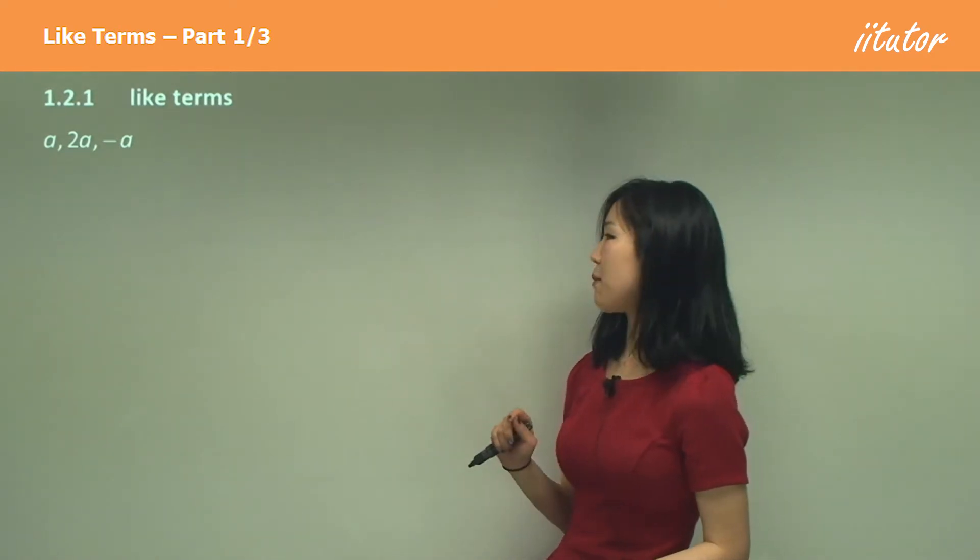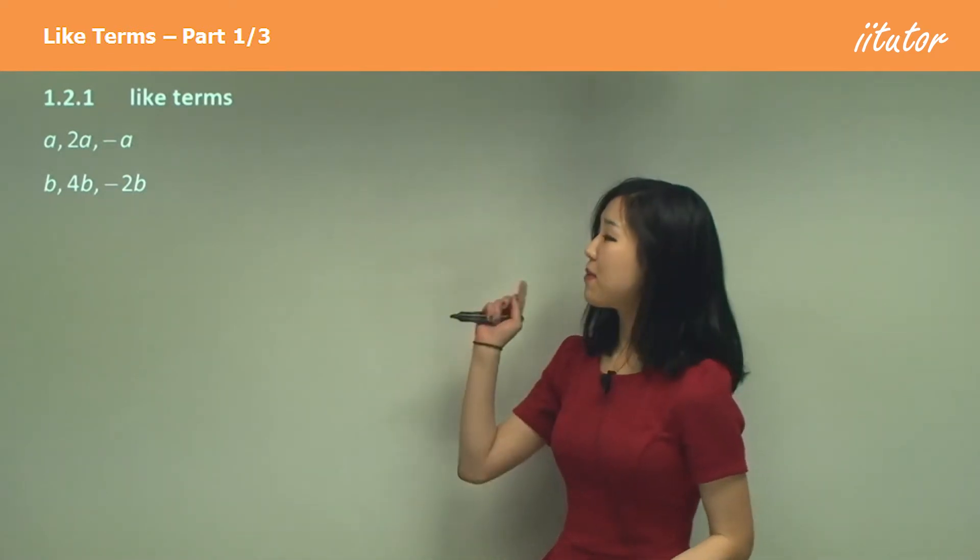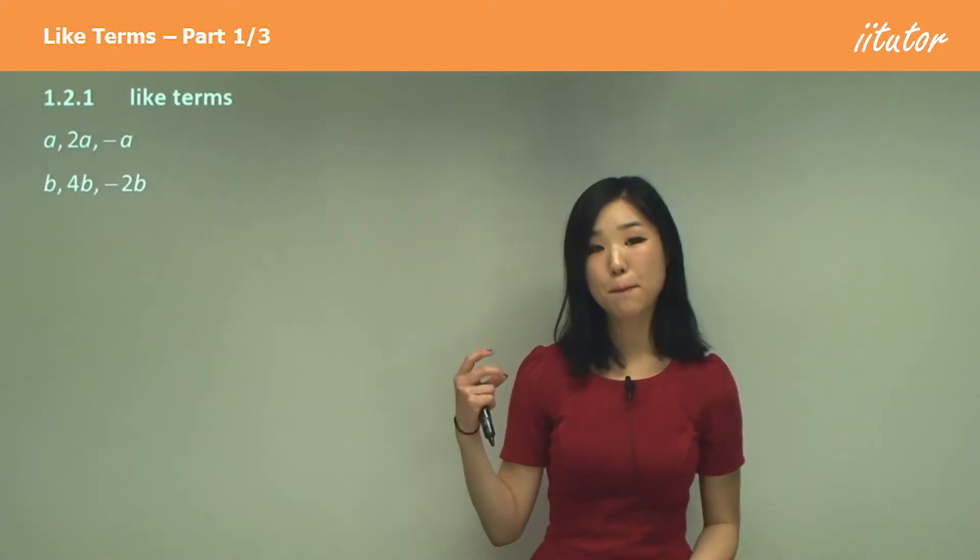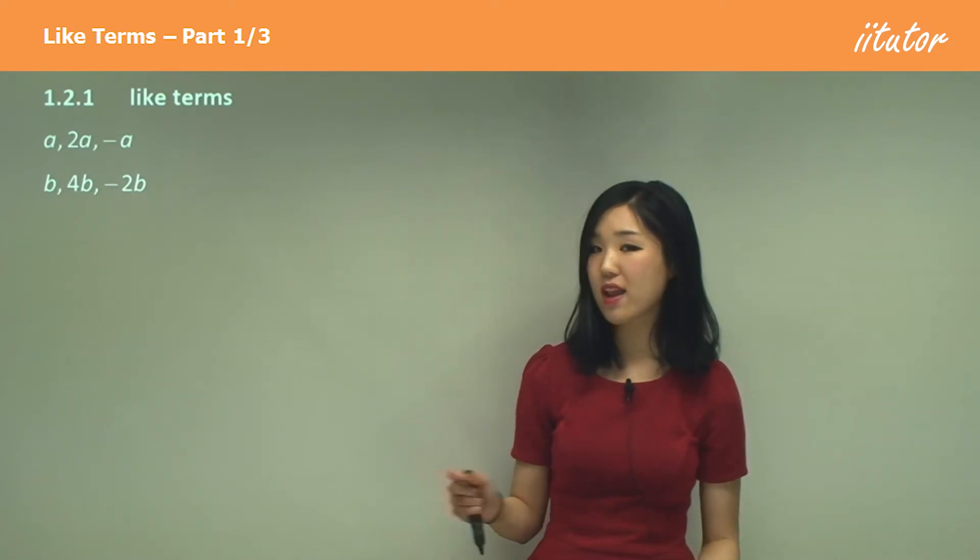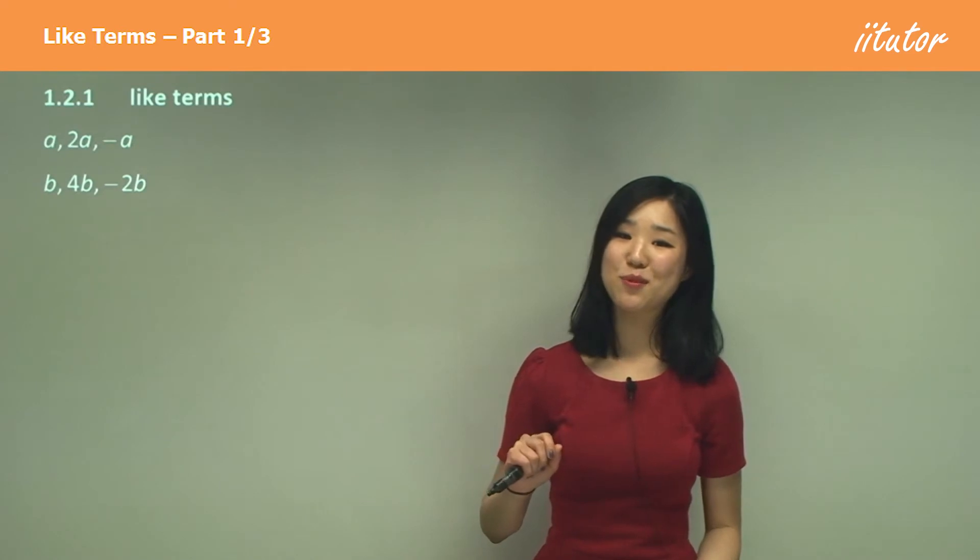So if I give you another example, b, 4b and negative 2b, these are also like terms because as you can see, they all have b. It's not b squared, it's not b cubed, it's simply b, so these are all like terms as well.